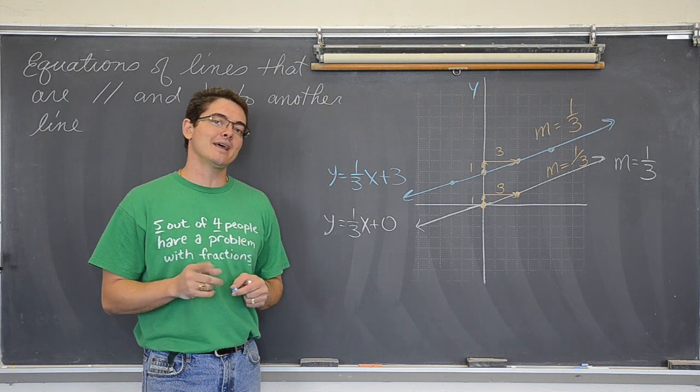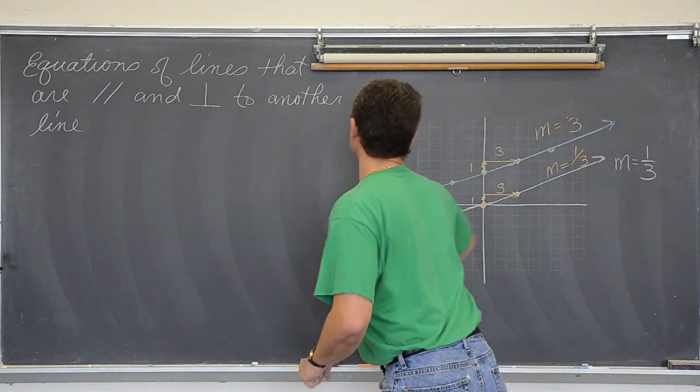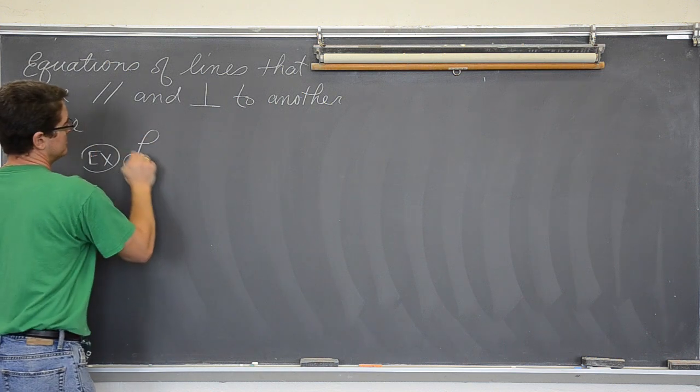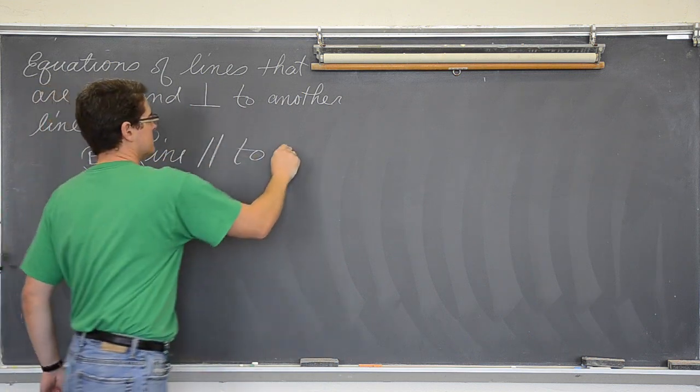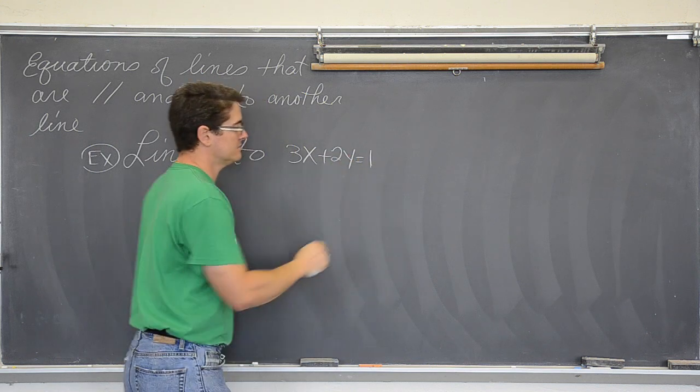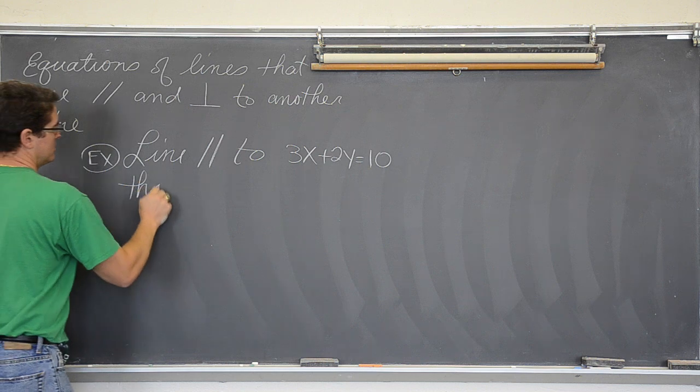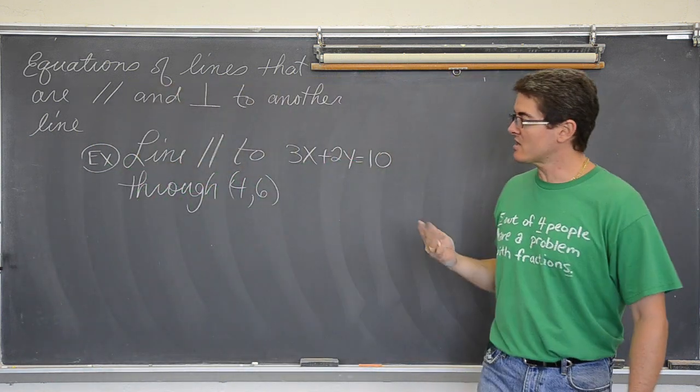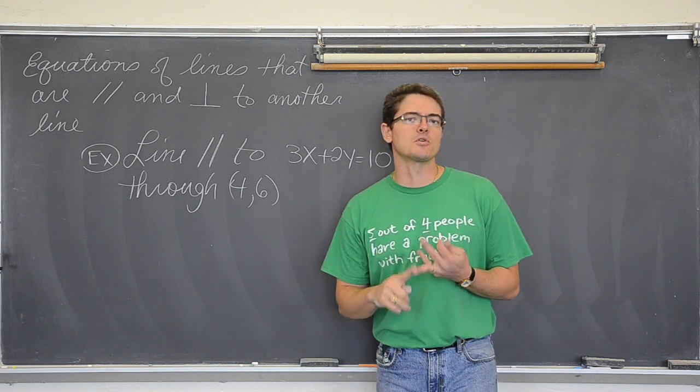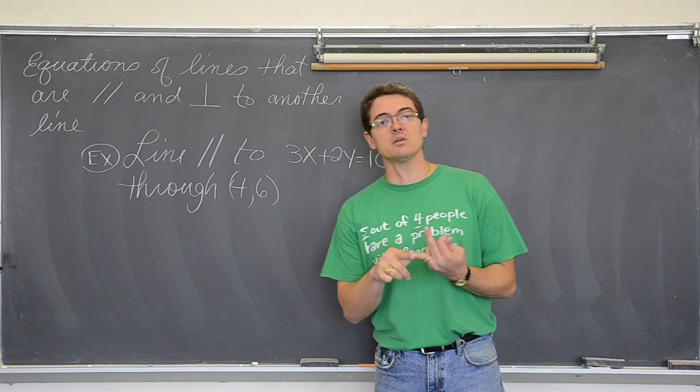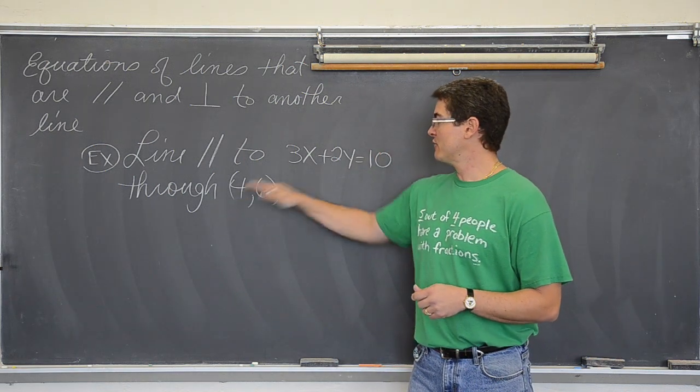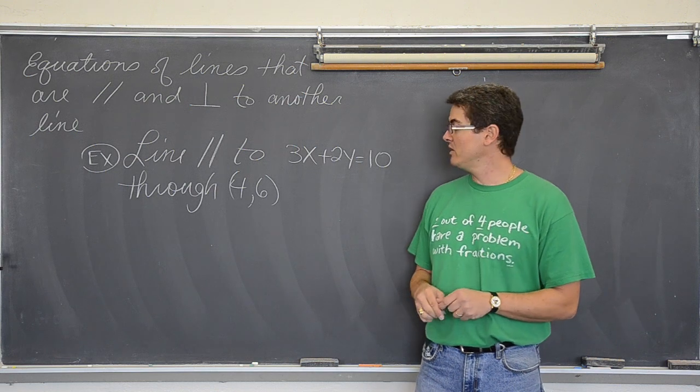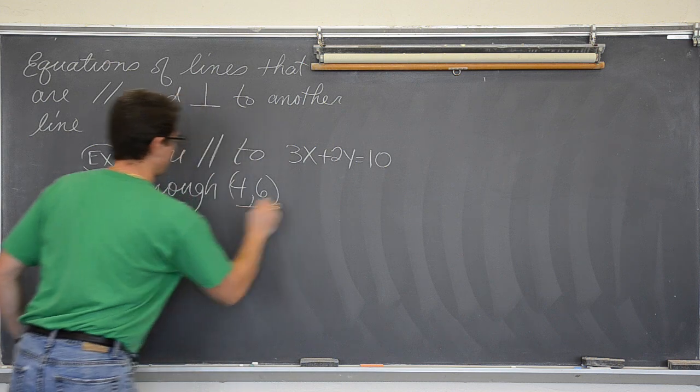Now let's see what it looks like if we are just given information and not the graph. We are going to find a line that is parallel to 3x plus 2y equals 10 and goes through (4,6). The other day I talked about slope intercept form of a line. That is y equals mx plus b. You have general form or standard form which is ax plus by plus c equals zero. And then you have what we are going to be using which is point slope form for the information given.